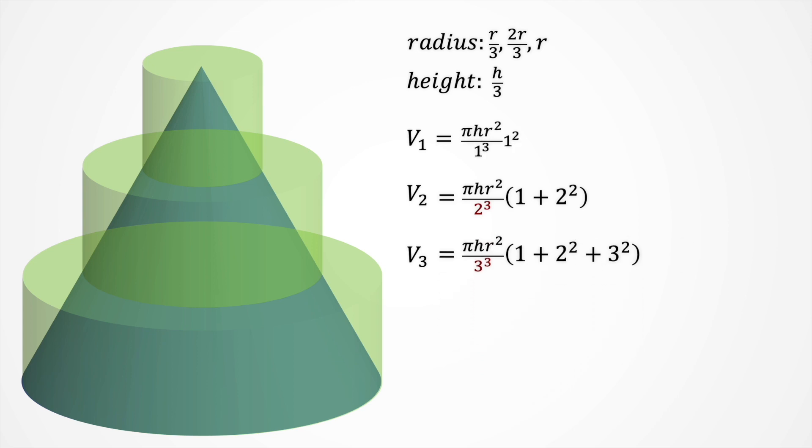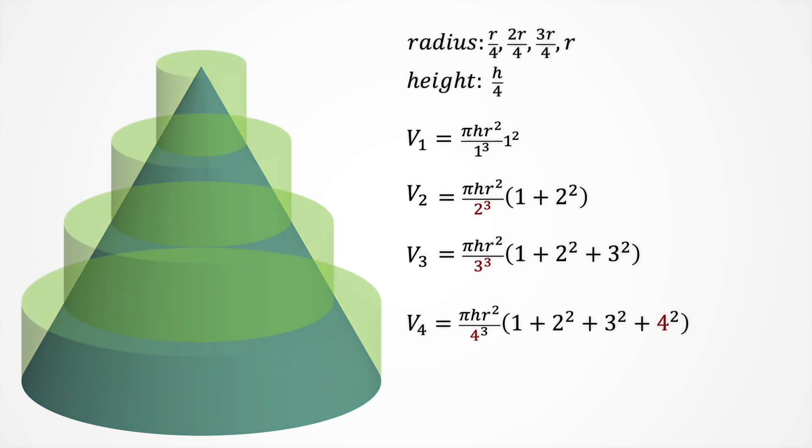If we rewrite V1, we cut into it a pattern in all these approximations. For example, we expect that V4 would have this form, dividing by 4 cubed, and multiplying by 1 plus 2 squared plus 3 squared plus 4 squared.